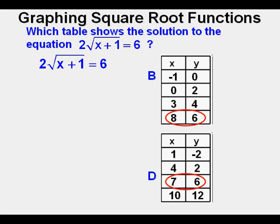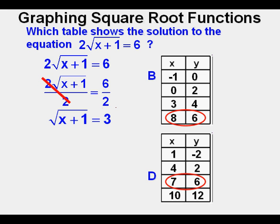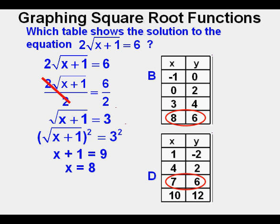First step, divide both sides of the equation by 2. 2 over 2 cancel on the left side of the equation. We now have square root of quantity x plus 1 equals 3. The next step to solving is to undo the square root sign, and this we can do by squaring both sides of the equation. What we have left is x plus 1 equals 9. And subtracting 1 from each side of the equation, x equals 8. And where do we see x equal to 8? Right here, answer B. That would make B our answer.